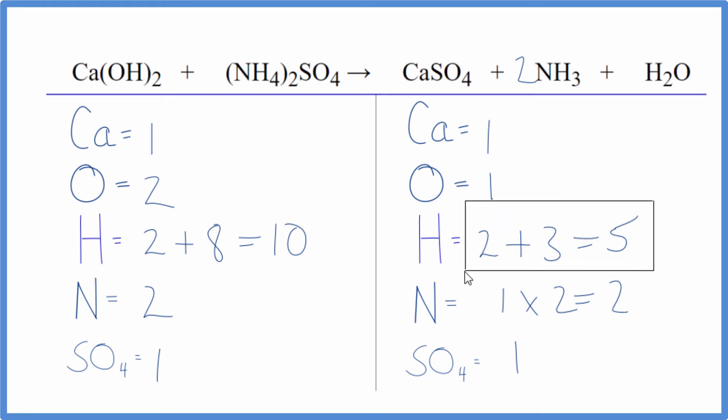For the hydrogen we have two times three, that's six, plus the two here, so now we have eight. Feels like we're getting close. If we multiplied the water by two, we'd have one times two, that would balance the oxygens.